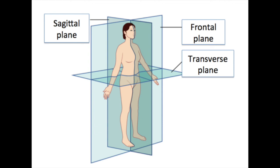All of these gross anatomical terms are really just important for moving forward throughout the rest of the semester. We're going to talk about the medial epicondyle and the lateral epicondyle, proximal structures and distal structures, so having these terms easily at hand is a goal for us for this unit.